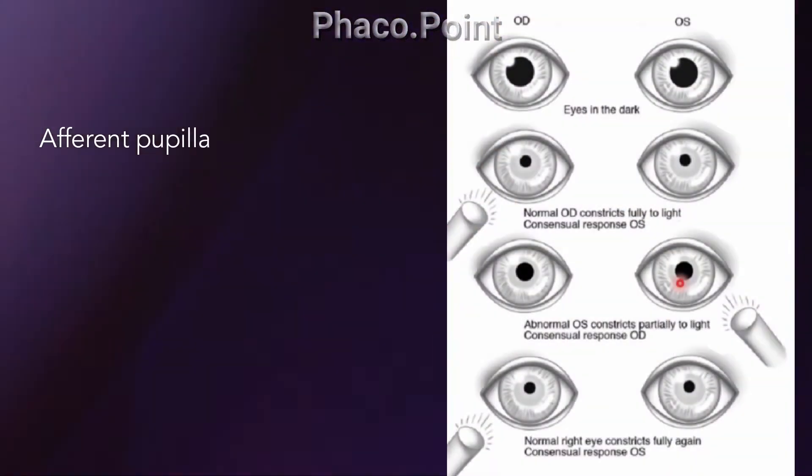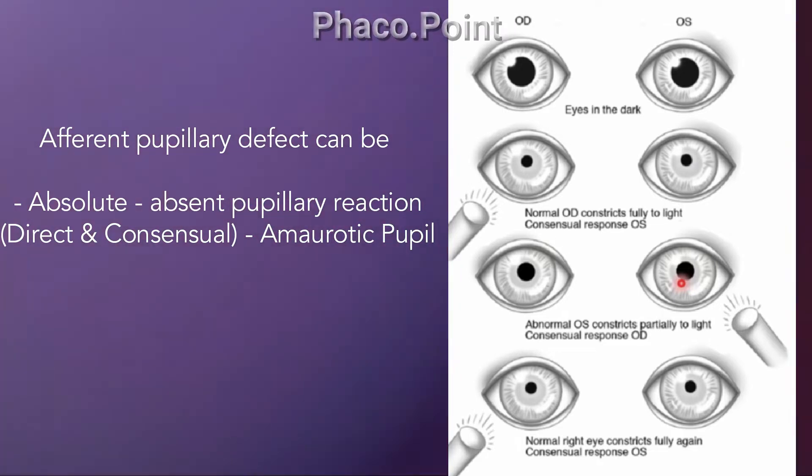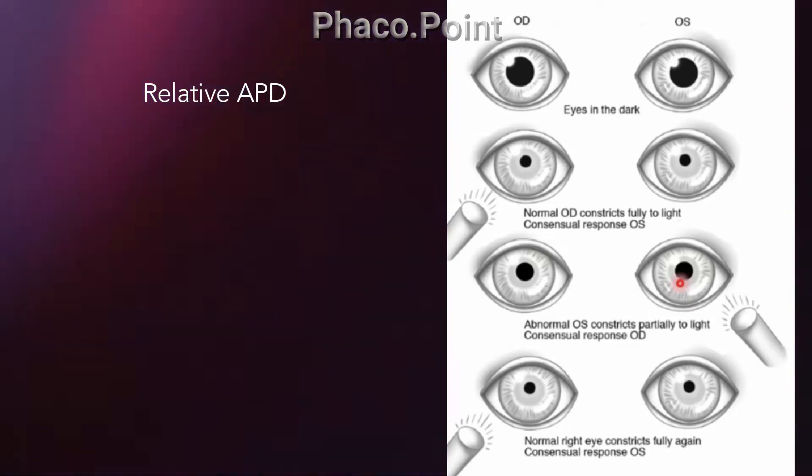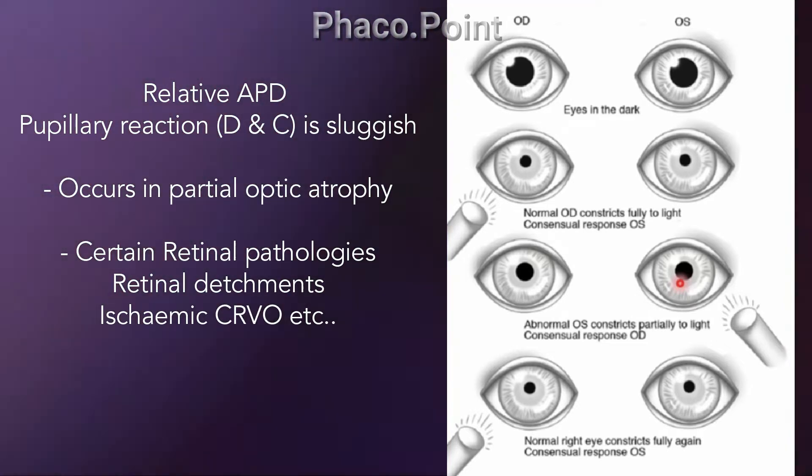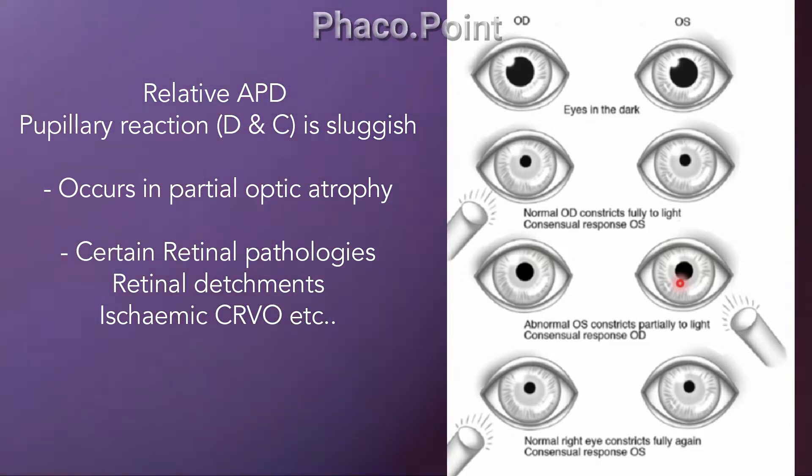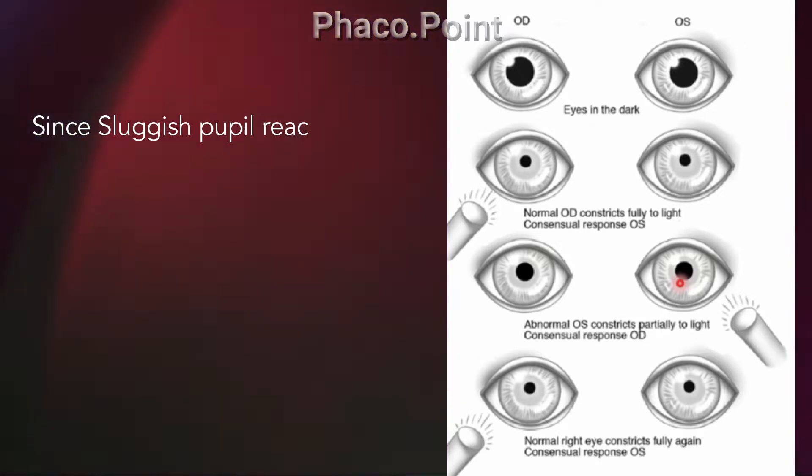There are three types of pupillary reaction: completely absent, sluggish, or brisk. A brisk pupillary light reflex means the pupil constricts with good amplitude and good speed; sluggish means low amplitude and low speed of constriction. When the pupil is reacting sluggishly and you're not sure whether it's sluggish or brisk, we can confirm this by doing the swinging flashlight test, first described by Marcus Gunn. Afferent pupillary defects can be absolute — total absence of direct and consensual reflex, as in an amaurotic pupil — or relative, with sluggish direct and consensual reflex, as in partial optic atrophy, retinal detachments, or ischemic CRVO.